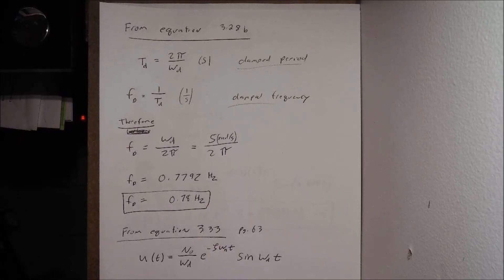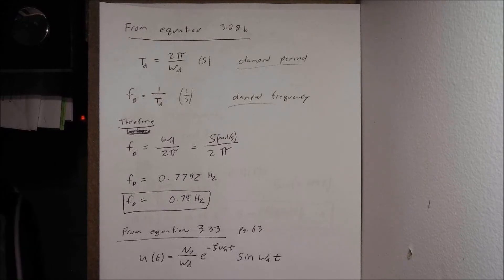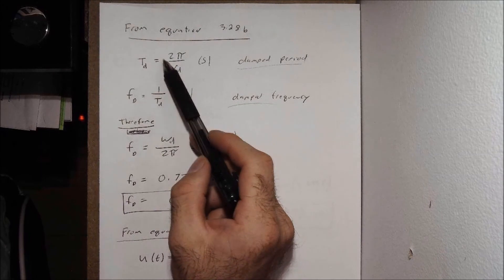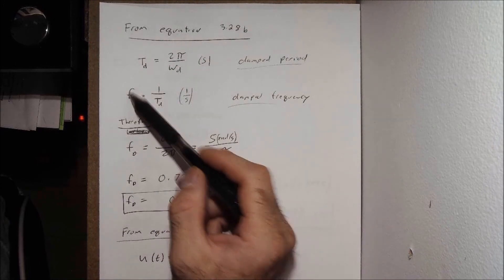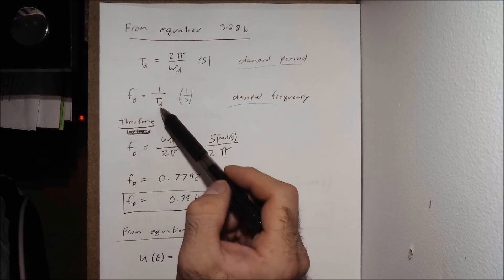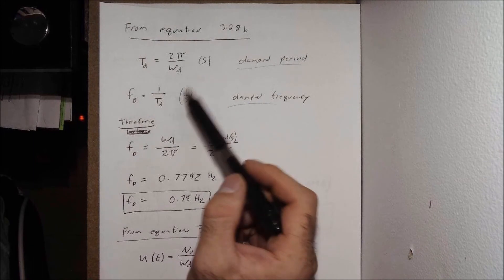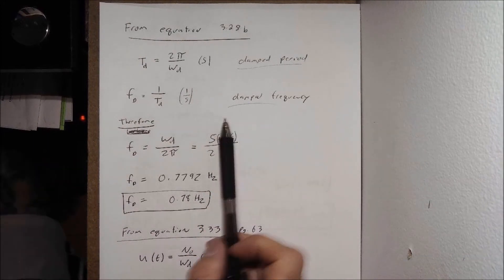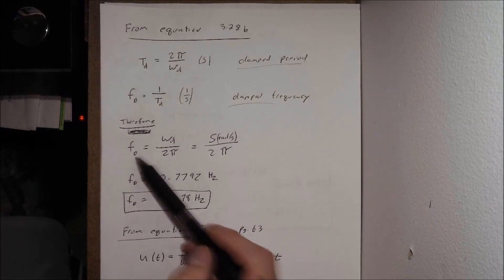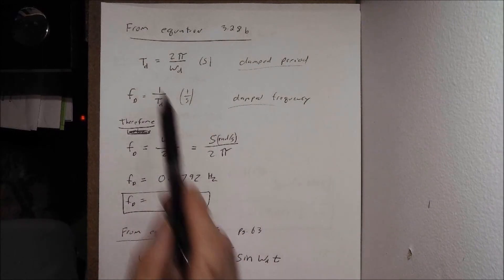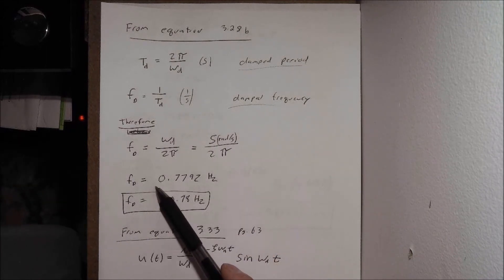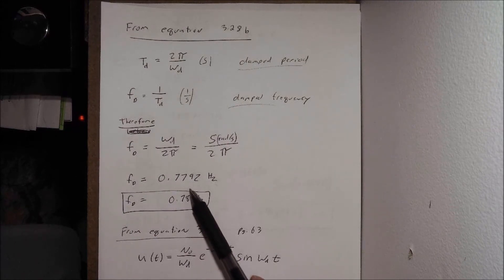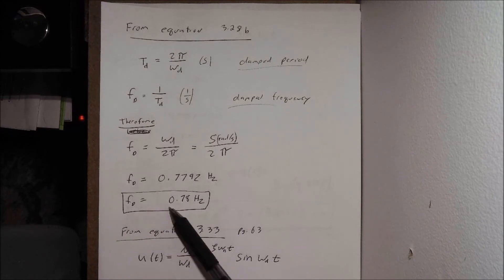Next, we want to find our damped period and damped frequency using equation 3.28b from our textbook. The damped period t sub d equals 2 pi over omega d. Since frequency is 1 over period, the damped frequency f sub d equals omega d over 2 pi. Plugging in our known omega d of 4.899 radians per second divided by 2 pi, we get f sub d equal to 0.7792 hertz, which rounds to 0.78 hertz.